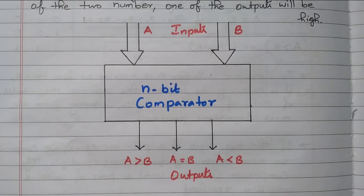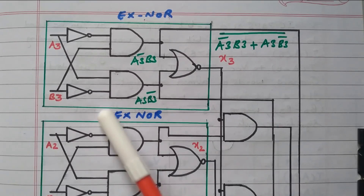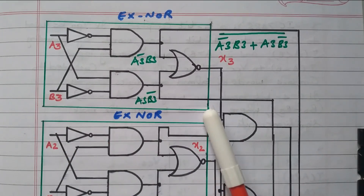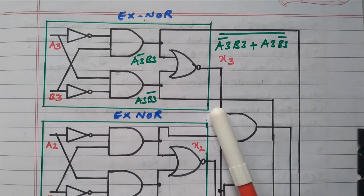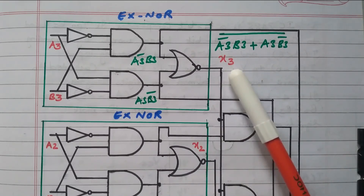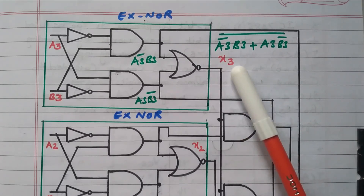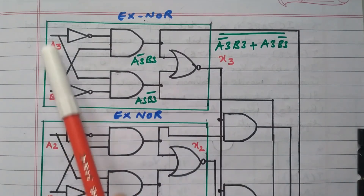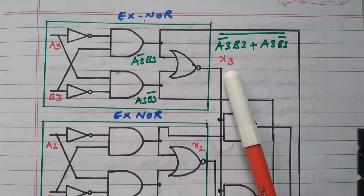Now we will go to the logical diagram. To implement the Boolean function, we design with logic gates. The XNOR gate is used because for A equal to B we need four XNOR gates giving X3, X2, X1, X0. If all four outputs are 1, that means A equals B. For X3, two AND gates and one NOR gate are used. The inputs A3' and B3 go to one AND gate, and A3 and B3' go to the other.